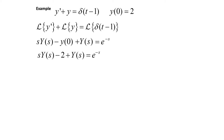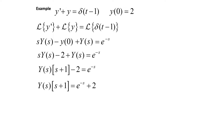We combine like terms on the left-hand side and factor out Y(s), so Y(s) times (s plus 1) minus 2 equals e to the negative s. Moving the 2 to the other side, Y(s) times (s plus 1) equals e to the negative s plus 2. To get Y(s) by itself, we divide both sides by s plus 1, so Y(s) equals e to the negative s over (s plus 1) plus 2 over (s plus 1).